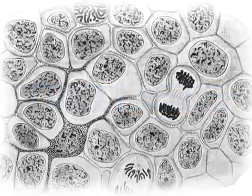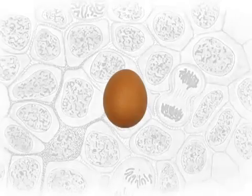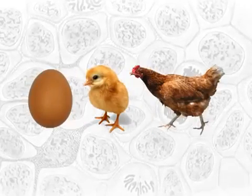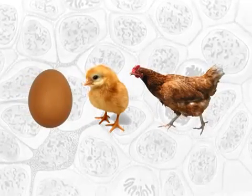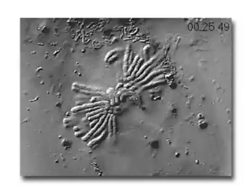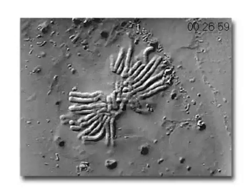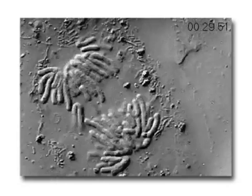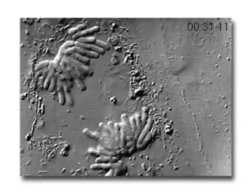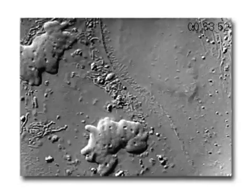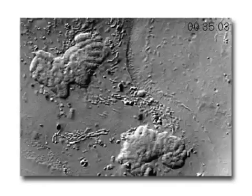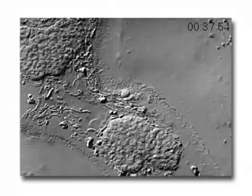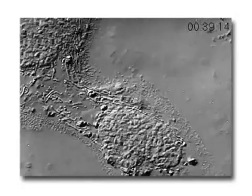Cell division is required for an organism to grow, mature, and maintain tissues. During the mitotic phase, a cell will undergo mitosis to form two new nuclei, and then divide to form two new individual cells during cytokinesis.